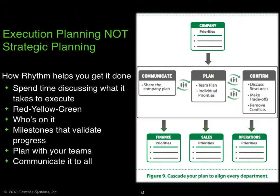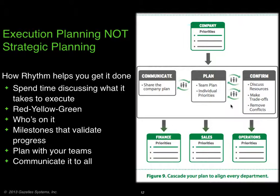Here's how Rhythm helps you get it done. You want to spend more time discussing what it takes to execute and know who's on it. Take the company's priorities, plan and communicate them very well, plan with individual teams, confirm the resources going to key initiatives, and then cascade that down to every department so every department has clarity on what they're supposed to do.